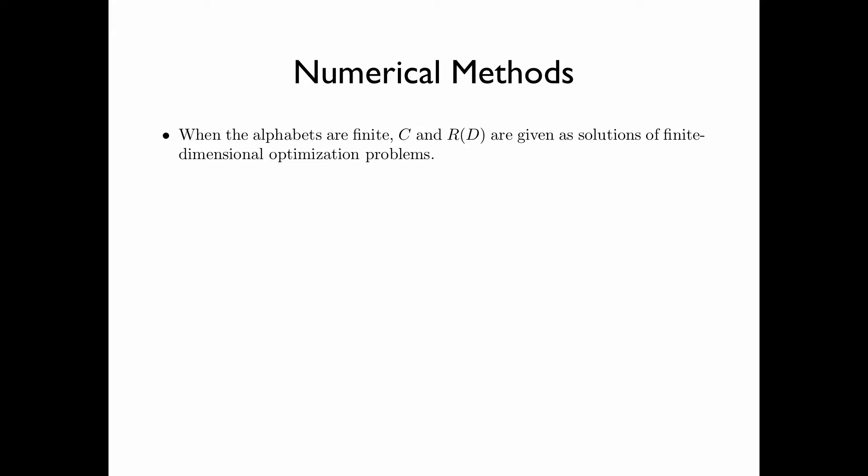When the alphabets are finite, the capacity C and the rate-distortion function R(D) are given as solutions of finite dimensional optimization problems. However, these quantities cannot be expressed in closed forms, except for very special cases.